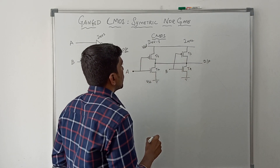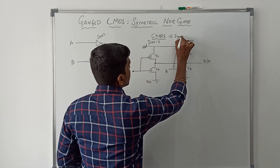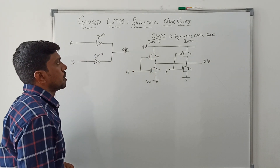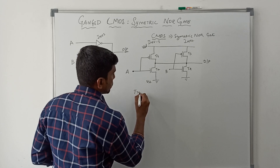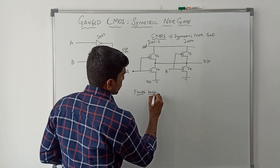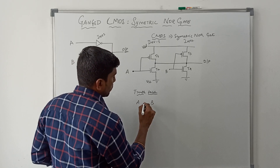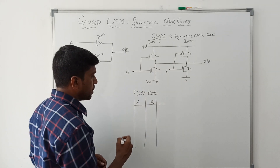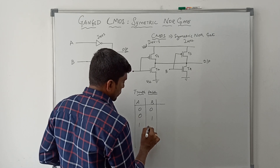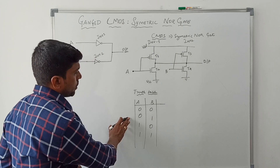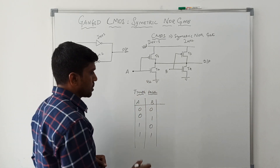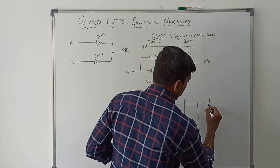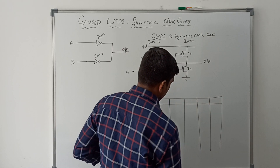From the shorter path of these two inverters you can get the output. This is the simple structure of symmetric NOR gate operation. Now I am going to write the truth table. In this NOR gate it has two input variables: one is A and another one is B. I am also verifying the transistor response in this truth table.